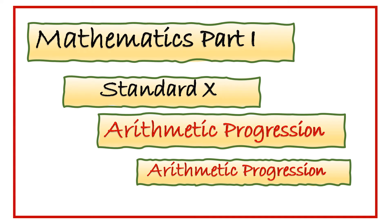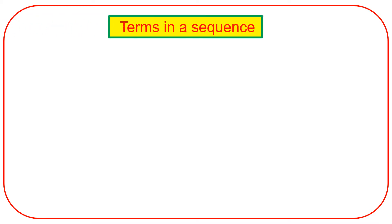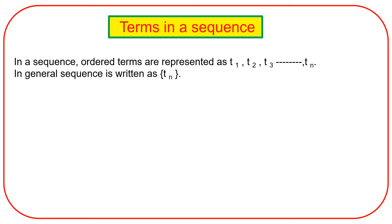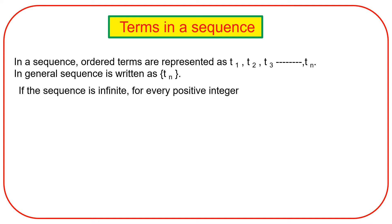The previous video's link is given in the description box — you can check it. Terms in sequence: in a sequence, ordered terms are represented as T1, T2, T3, ..., Tn. In general, the sequence is written as {Tn}. If the sequence is infinite, for every positive integer n there is a term Tn.